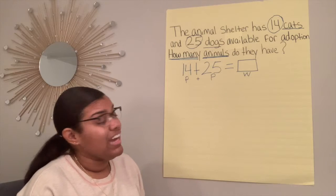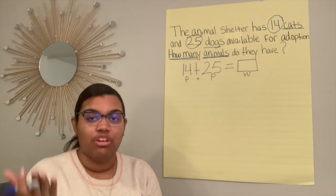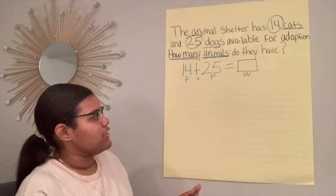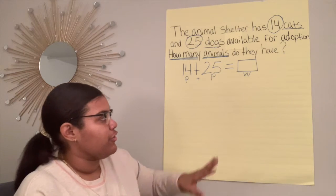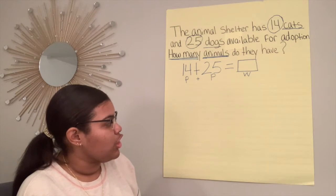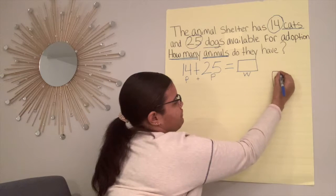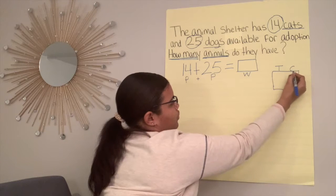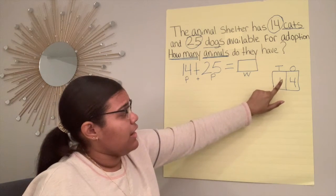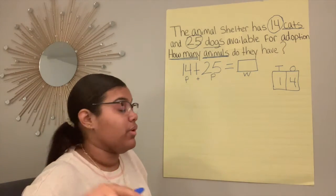Before we do that, I have to talk to you about base 10. We're going to be showing this using 10s and 1s. 10s are shown using strips and 1s are shown using singles. So let's think about this. You can use a 10s and 1s chart to help you figure out which is 10s and which is 1s in the number 14, and also with the number 25. I'm going to show you it on the side just in case you need it. Let's take a look at the number 14 and put it in our 10s and 1s chart. How many 10s are in the number 14?